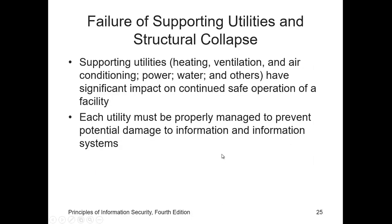Other threats can occur due to failure of supporting utilities and structural collapse. Supporting utilities such as heating, ventilation, and air conditioning, power, water, and other utilities have a significant impact on the continued safe operation of a facility. For example, if the AC is not sufficient to cool the systems, that will affect the workstations, the server, the server room, and other equipment. Systems must be kept at a certain temperature, and humidity must also be maintained at a certain level.